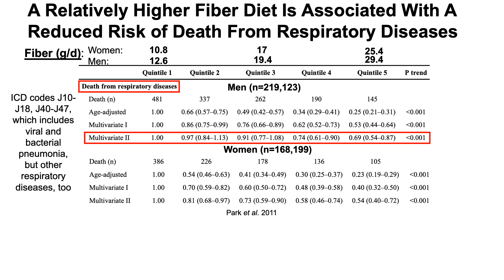Looking at the fully adjusted model for men: men that consumed the highest amount of fiber in the study — 29 grams per day — had a significantly reduced risk of death from respiratory diseases of 31% when compared with men that consumed the lowest amount, 12.6 grams. Starting from quintile 4 of fiber intake, somewhere above 19 grams per day, was associated with a 26% reduced risk of death from respiratory diseases.